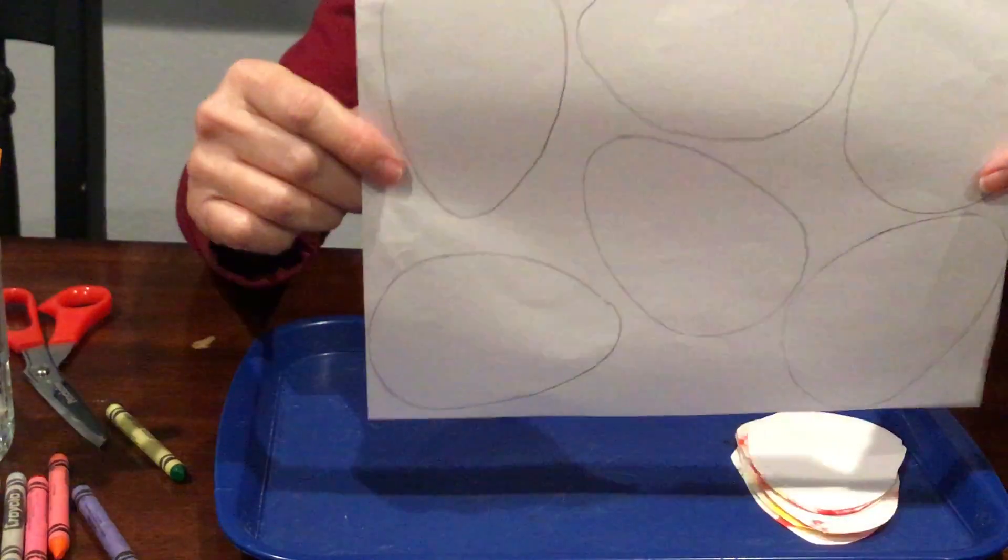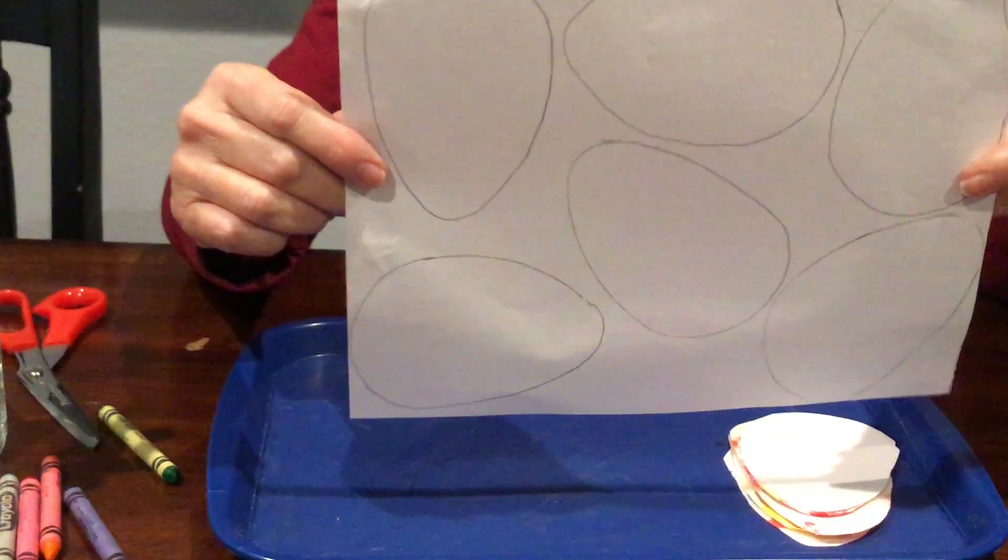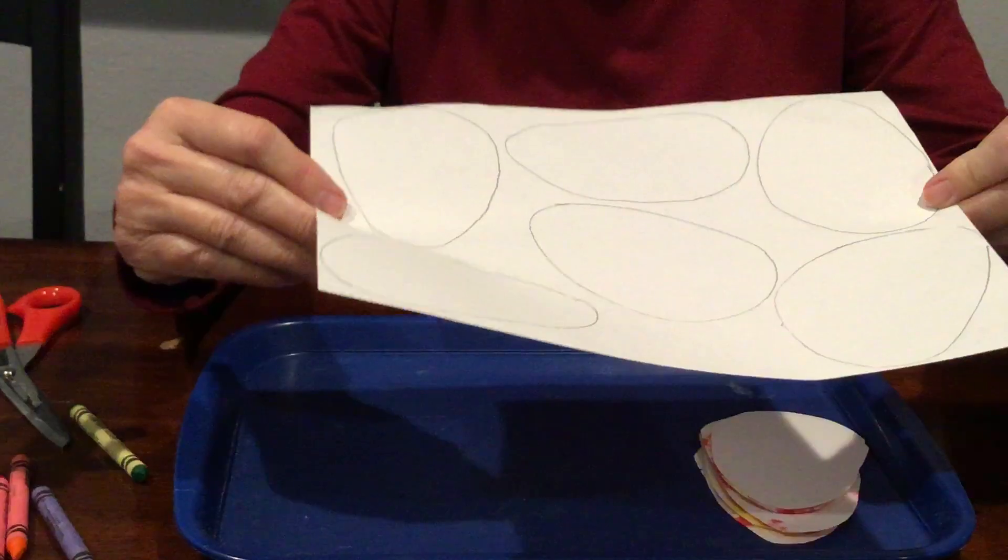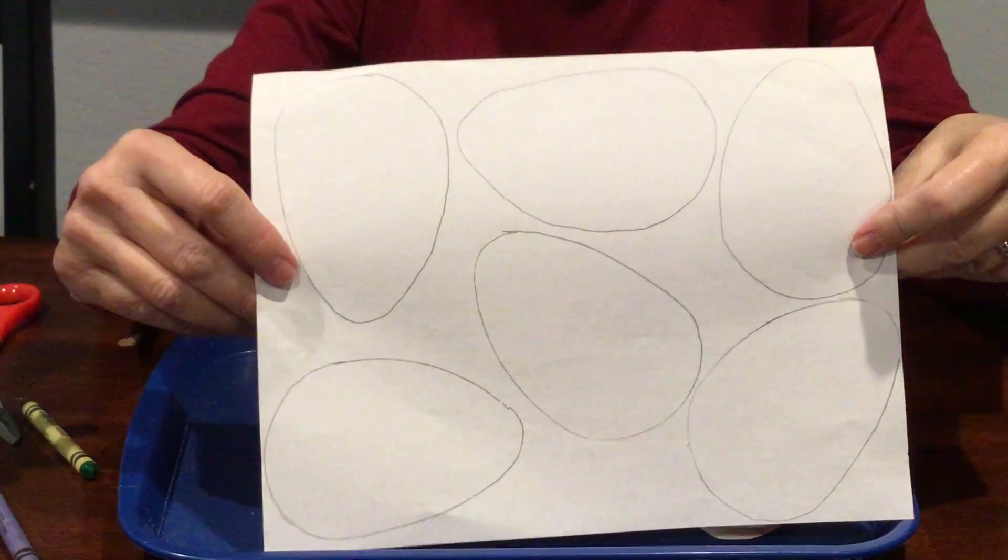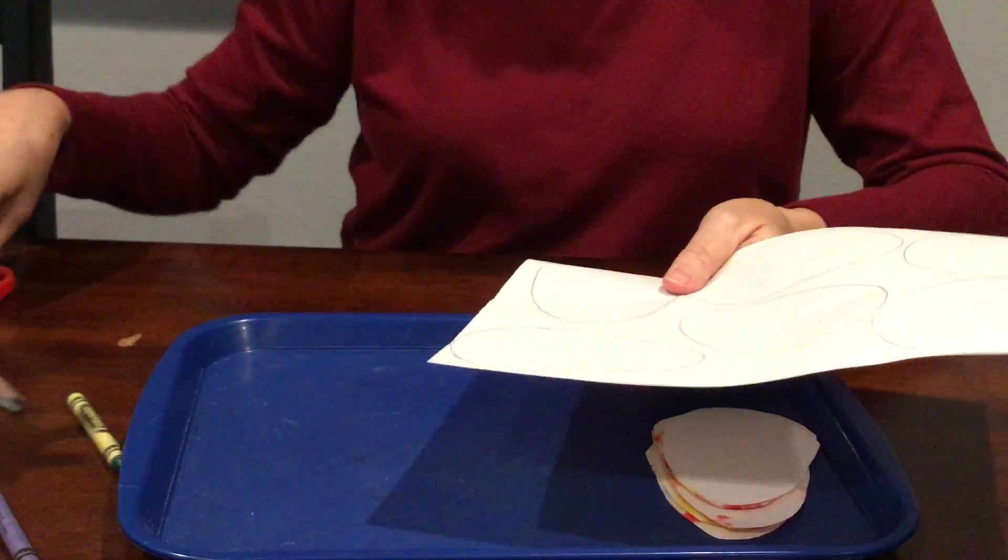Then on the back I traced egg shapes. I got six eggs on the back of mine, but you might only get one or two if you draw bigger eggs.